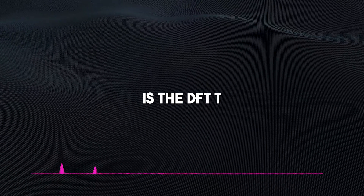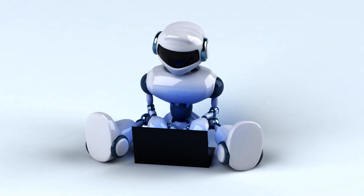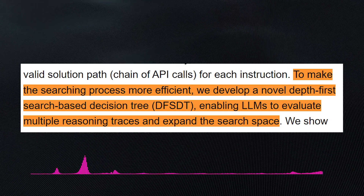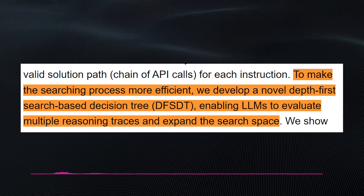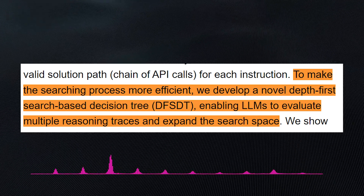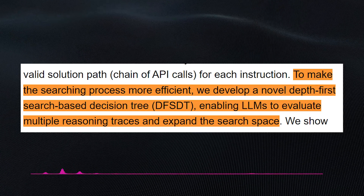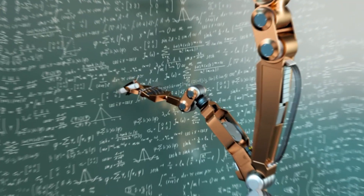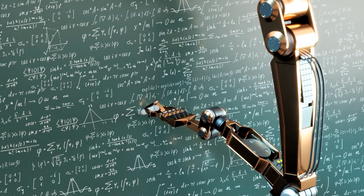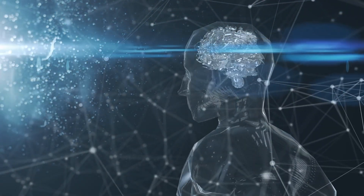The other component is the DFSDT, or Depth First Search Based Decision Tree, which is a planning algorithm that helps the LLM find a sequence of steps to complete a task. As stated in the paper, to make the searching process more efficient, they developed a novel DFSDT, enabling LLMs to evaluate multiple reasoning traces and expand the search space. This component can search the available tools to find the most suitable one to complete a given task, determined by the prompt from the user, making the model far more efficient.